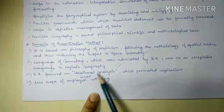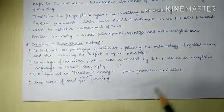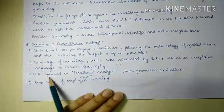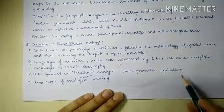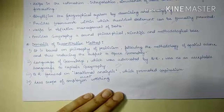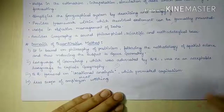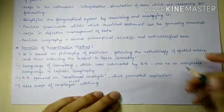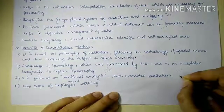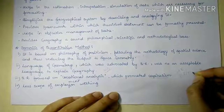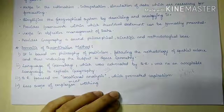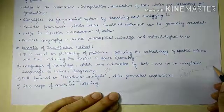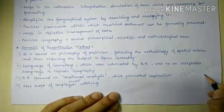Quantitative revolution focuses on locational analysis — how to establish an industry to gain maximum profit. This focus promotes capitalism, which leads to exploitation of both human resources and environmental or natural resources. Because of this, the rich are getting richer and the poor are getting poorer.